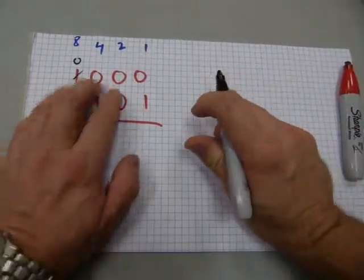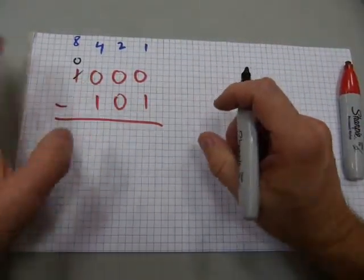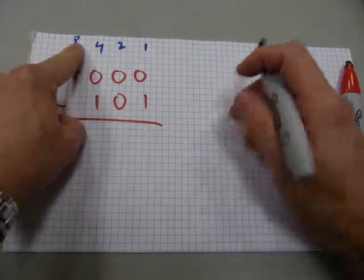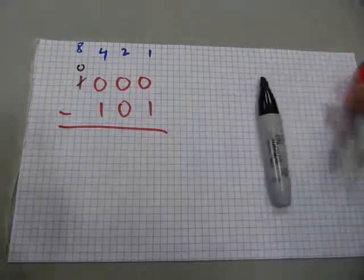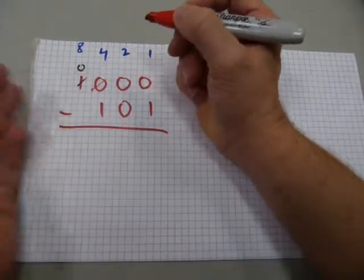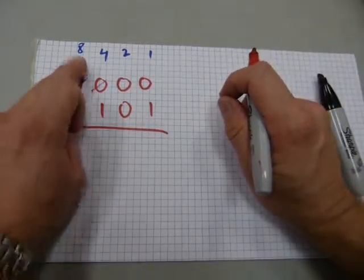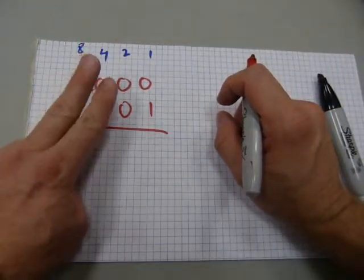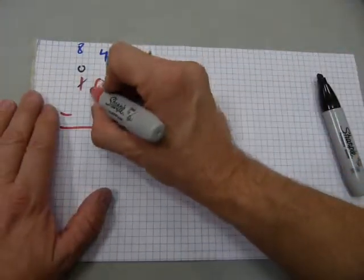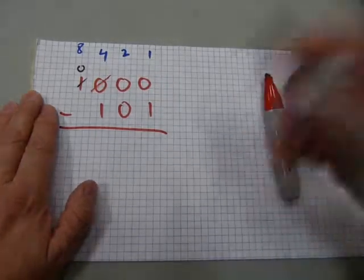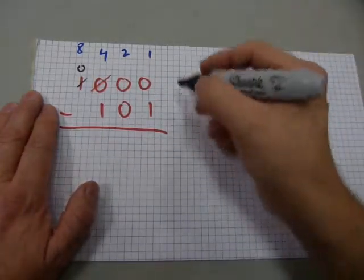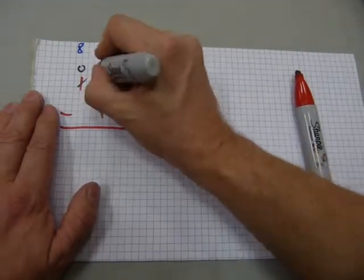Instead of having one eight-dollar denomination, we're going to break it into two four-dollar denominations. Previously we had zero fours; now we're going to have two fours. But remember, two is written as 10 in binary.